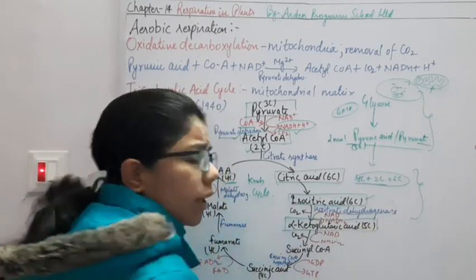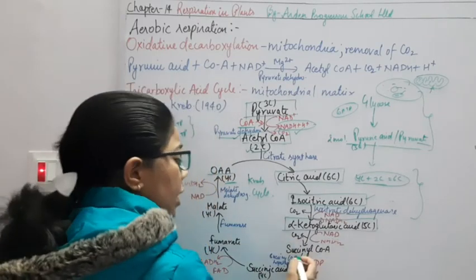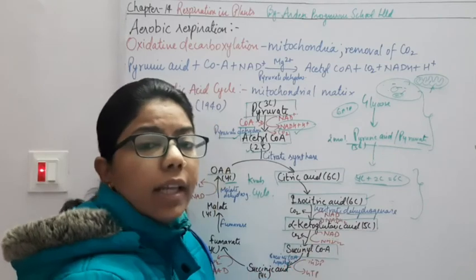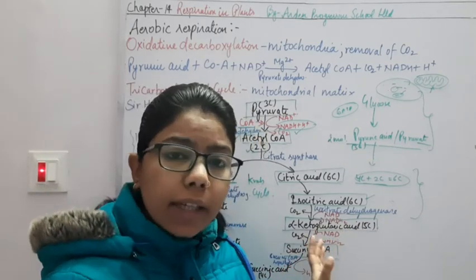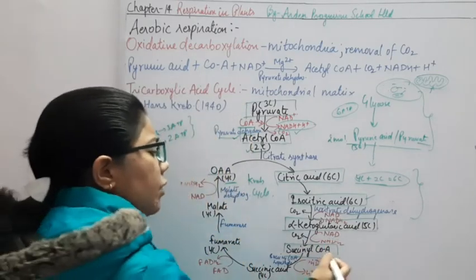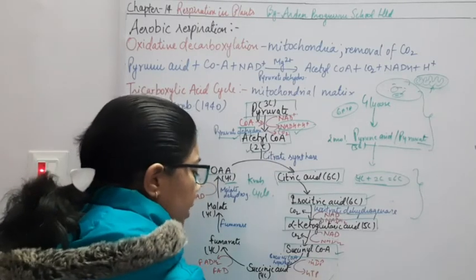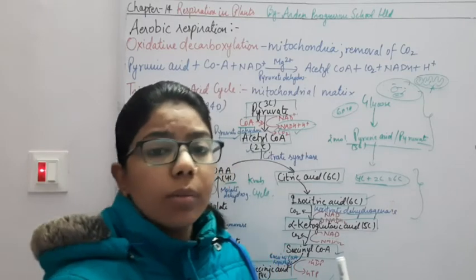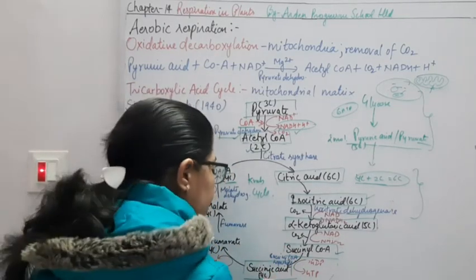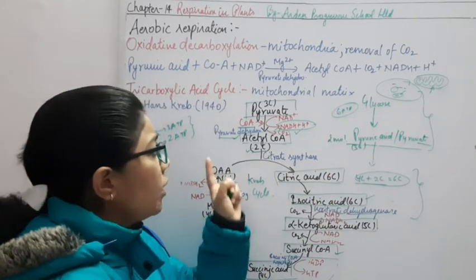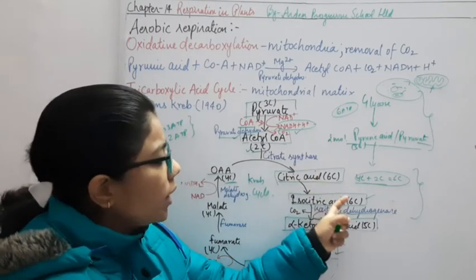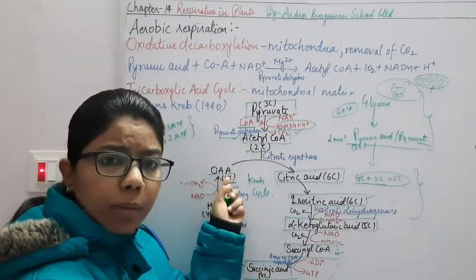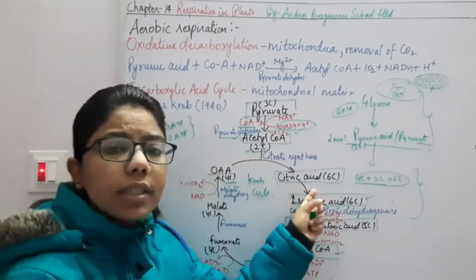Alpha-ketoglutaric acid, a 5-carbon compound, is converted into succinyl coenzyme A, a 4-carbon compound, by removal of one more CO₂. Again, a dehydrogenase enzyme transforms NAD into NADH₂. Succinyl coenzyme A is unstable, so it forms succinic acid (also called succinate), which is a 4-carbon compound. Notice: we started from a 4-carbon compound (oxaloacetate), added a 2-carbon compound to make 6 carbons, then came back to a 4-carbon compound.